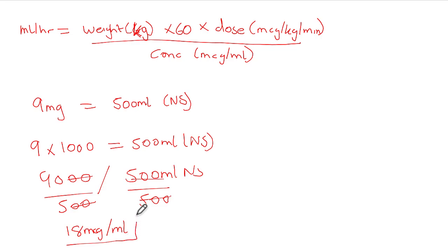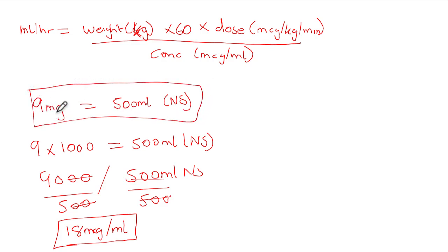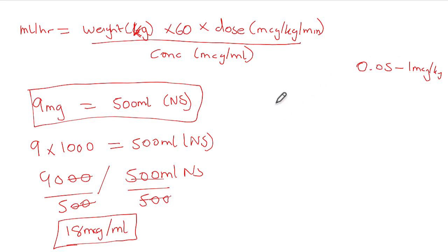Make sure the concentration does not exceed 18 micrograms per mil if you don't have a central line. With a central line you can go higher, but on wards without central lines, keep the combination to 9 mg adrenaline in 500 mils of saline, giving 18 micrograms per mil. The dose range for adrenaline is 0.05 to 1 microgram per kg per minute. If your patient is not improving by around 0.8, consider another cause or adding a second inotrope.